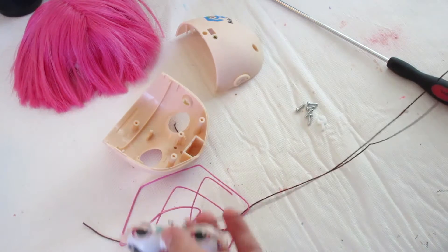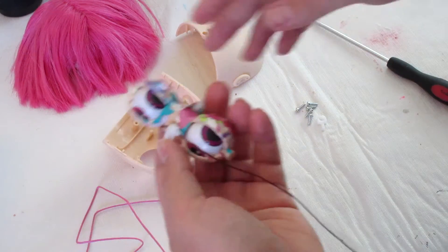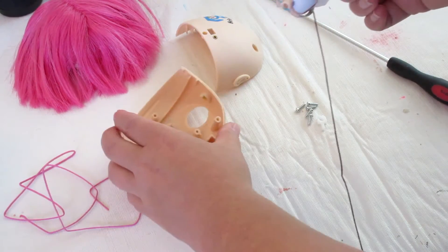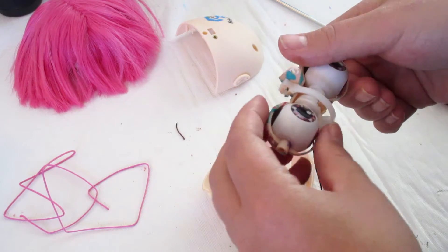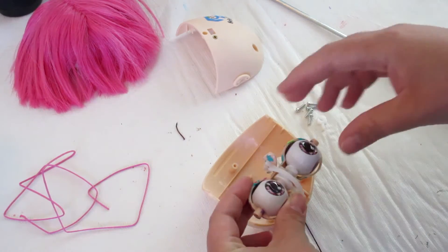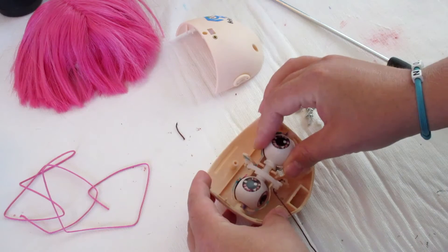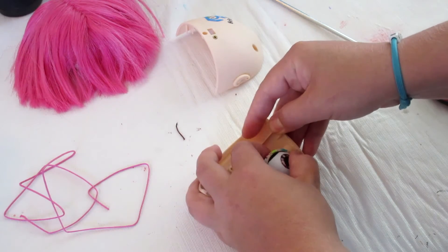That's going to be your first string. At this point, you can put the mechanism back into the doll because that string is the hardest part to get in, and it's easier to get in when the eye mechanism is out.